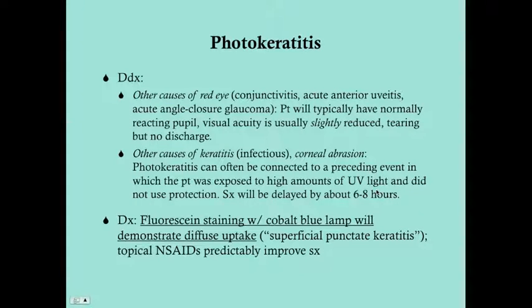The differential for photokeratitis includes any other cause of red eye: conjunctivitis, acute anterior uveitis, and acute angle closure glaucoma. With photokeratitis the patient will typically have a normally reacting pupil, which sets it apart from acute anterior uveitis or acute angle closure glaucoma. In some very severe cases the patient may have reactive miosis, but typically the pupil reacts normally.